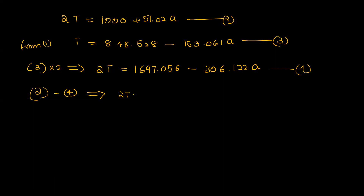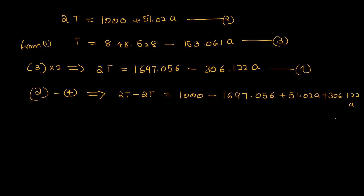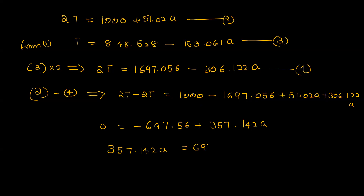Adding the two equations and canceling the T terms: 0 equals minus 697.56 plus 357.142 a. Therefore, a equals 697.56, and solving: a is equal to 697.56 divided by 357.142, that is equal to 1.953 meters per second squared.